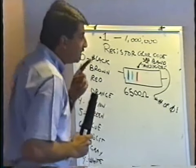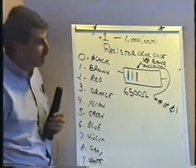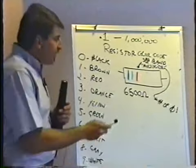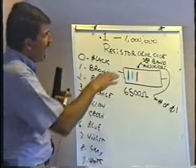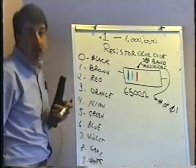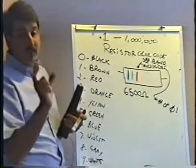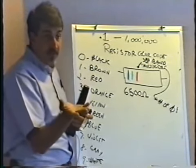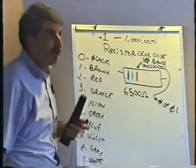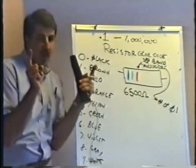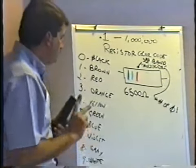The third band has to be the multiplier because we have resistors that are a million ohms or more. If the third band wasn't the multiplier and you just wrote down the number, the largest value you could represent with three bands would be 999 ohms. Unless you want a resistor that's very long just to fit all the zeros, you have to do it a different way — so the third band is the multiplier band.